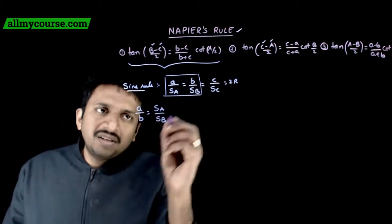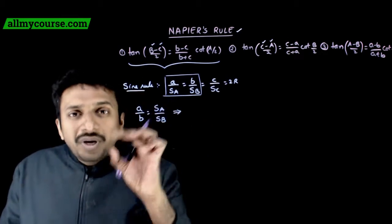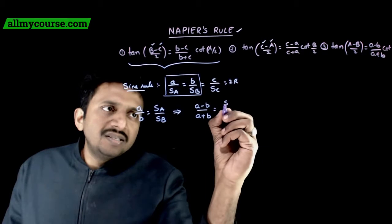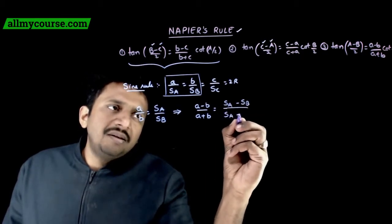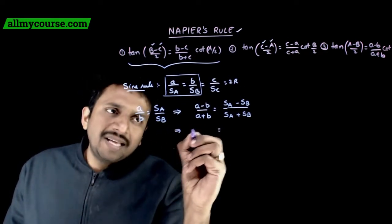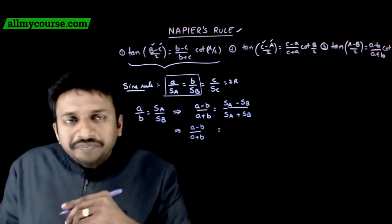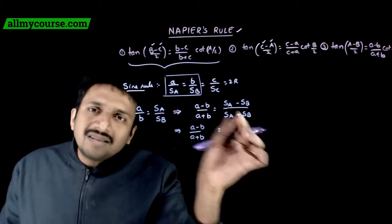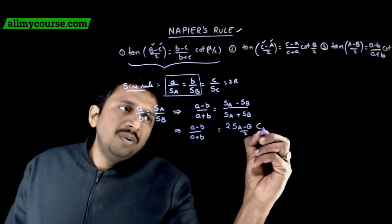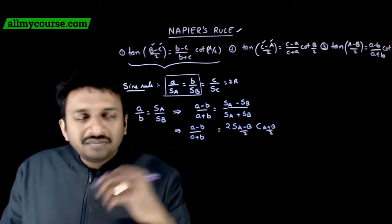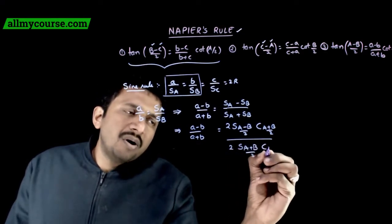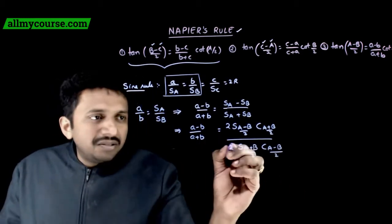From a/b = sin A / sin B, if we use componendo and dividendo, then (a minus b) by (a plus b) is equal to (sin A minus sin B) by (sin A plus sin B). Now we can use sum-to-product transformation formulas. sin A minus sin B equals 2 sin((A minus B)/2) cos((A plus B)/2), divided by sin A plus sin B, which equals 2 sin((A plus B)/2) cos((A minus B)/2). The 2s cancel.